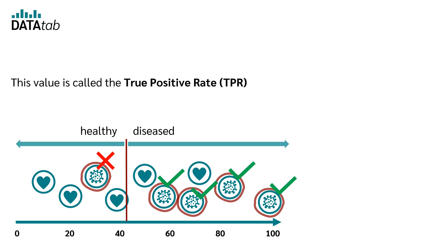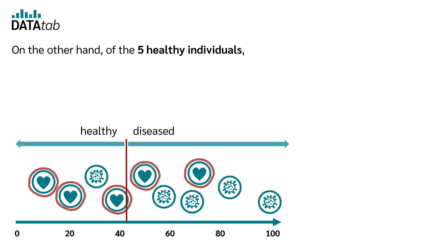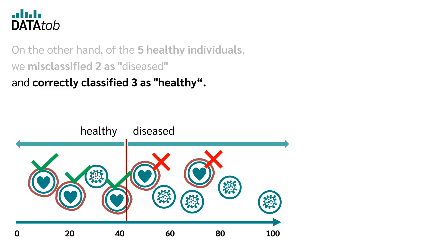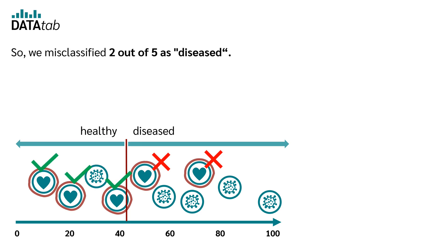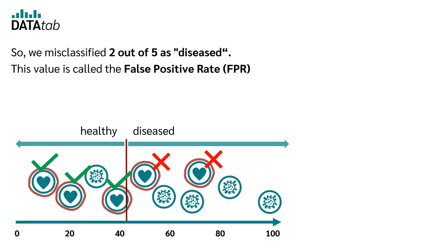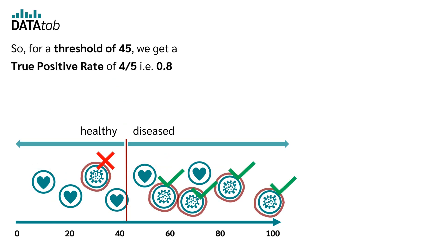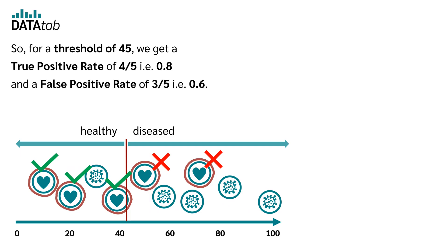This value is called the true positive rate (TPR) and is equal to the sensitivity. On the other hand, of the 5 healthy individuals, we misclassified 2 as diseased and correctly classified 3 as healthy. So we misclassified 2 out of 5 as diseased. This value is called the false positive rate (FPR) and is 1 minus the specificity. So for a threshold of 45, we get a true positive rate of 4 out of 5, i.e. 0.8, and a false positive rate of 2 out of 5, i.e. 0.6.